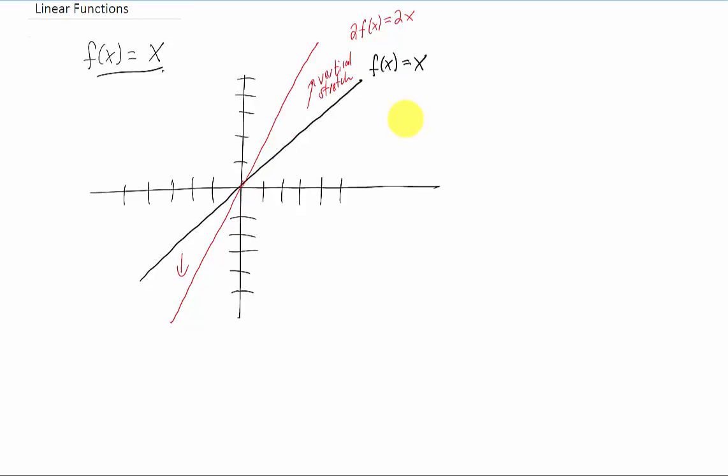What if instead we multiplied this function by, say, 1 half? Well, the function would get shallower, and it's as if we took our original function x and squished it vertically towards the x axis.